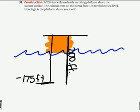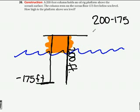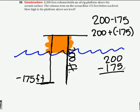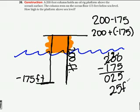All we have to do is subtract 200 minus 175. You could change this to 200 plus a negative 175, but you don't really have to — you could just do 200 minus 175, which equals 25. So the platform is 25 feet above sea level.